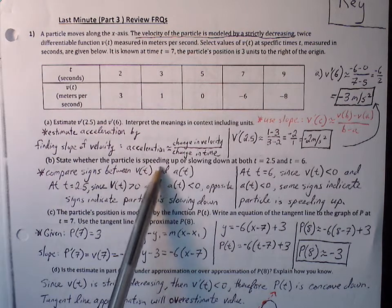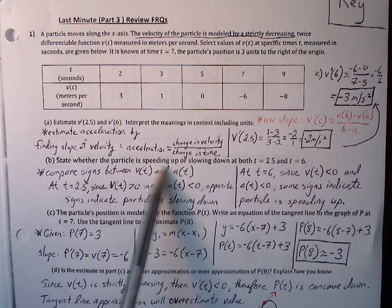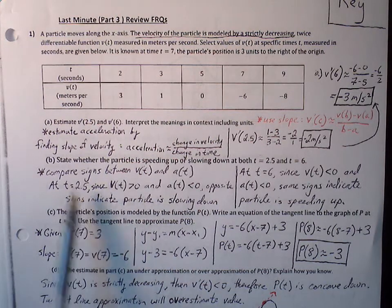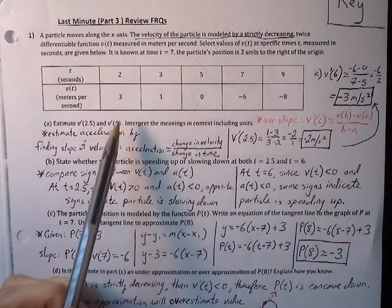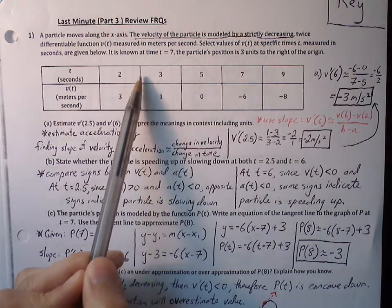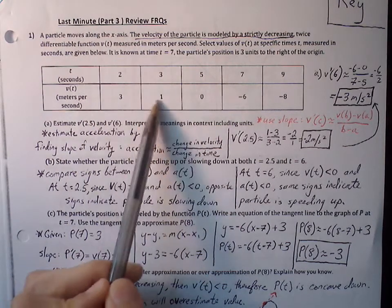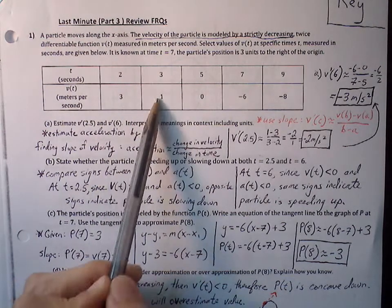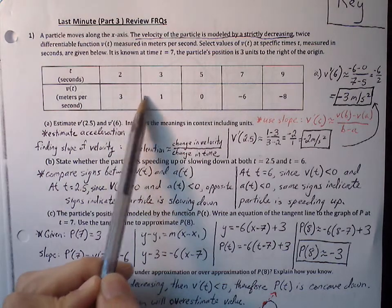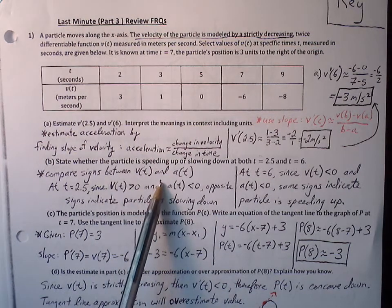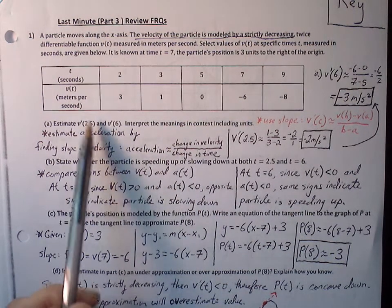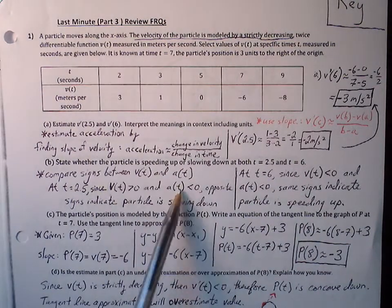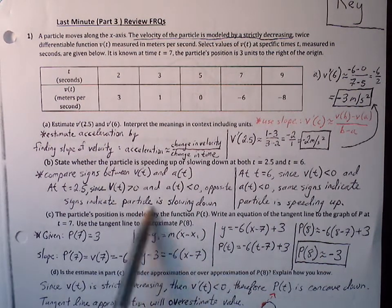Part B: state whether the particle is speeding up or slowing down. To determine that, we compare signs between velocity and acceleration. At t equals 2.5, our velocity is positive because between the values 3 and 1 it's decreasing but won't dip negative. So velocity is positive. Acceleration is negative because our approximation gives negative 2. Positive velocity and negative acceleration — opposite signs — indicate the particle must be slowing down.